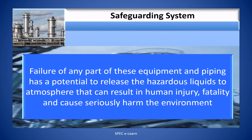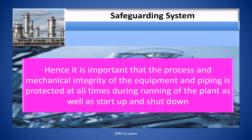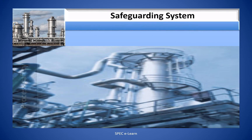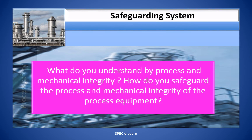This equipment and piping carry a huge inventory of hazardous process liquids at varying pressures and temperatures. Failure of any part of this equipment and piping has the potential to release hazardous liquids to the atmosphere, which can result in human injury, fatality, and serious harm to the environment. It is therefore important that the process and mechanical integrity of the equipment and piping is protected at all times during running, start-up, and shut-down of the plant.